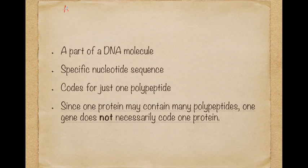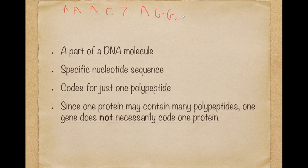So if I write a DNA sequence — let's say C, T, A, G, G, a couple thousand bases here, and then C, T, A — and they're complementary below. Do you remember the complementary base pairing?